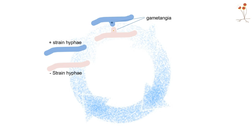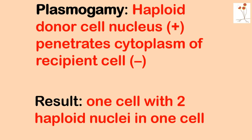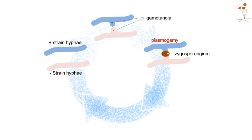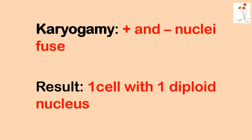Before continuing, I'd like to define the term plasmogamy. The haploid nucleus of the positive-strand donor cell is going to penetrate the cytoplasm and join that of the negative recipient strain. The result is a cell that has two haploid nuclei — one from the plus strand and one from the minus strand — and this leads to the formation of a zygosporangium. The zygosporangium at this moment has two nuclei. These two nuclei are going to fuse together, which brings us to the next term: karyogamy. A plus nucleus and a minus nucleus fuse together to give a single nucleus that is now diploid — the first time a fungal cell will have two copies of the chromosomes.